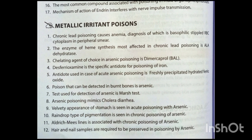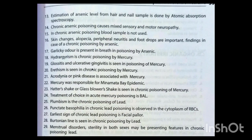Arsenic poisoning mimics cholera diarrhea. Velvety appearance of the stomach is seen in acute arsenic poisoning. Raindrop type of pigmentation is seen in chronic arsenic poisoning. Aldrich-Mees lines are associated with chronic arsenic poisoning. Hair and nail samples are required to be preserved in arsenic poisoning. Estimation of arsenic level from hair and nail samples is done by atomic absorption spectroscopy. Chronic arsenic poisoning causes mixed sensory and motor neuropathy. Garlic odor is present in arsenic poisoning.